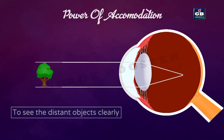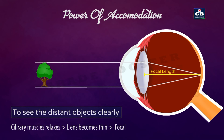To view distant objects clearly, the ciliary muscles get relaxed and the lens becomes thin. Then the focal length increases and we can see the far objects clearly. So to see a distant object, the ciliary muscles must be relaxed, causing the lens to become thin and the focal length to increase.